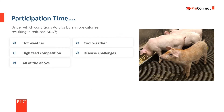There are several factors or conditions that can cause pigs to burn more calories and reduce their average daily gain. Under what conditions do pigs burn more calories, resulting in reduced average daily gain? A, hot weather; B, cool weather; C, high feed competition; D, disease challenges; or E, all of the above? The correct answer is E — all of these conditions can reduce average daily gain.